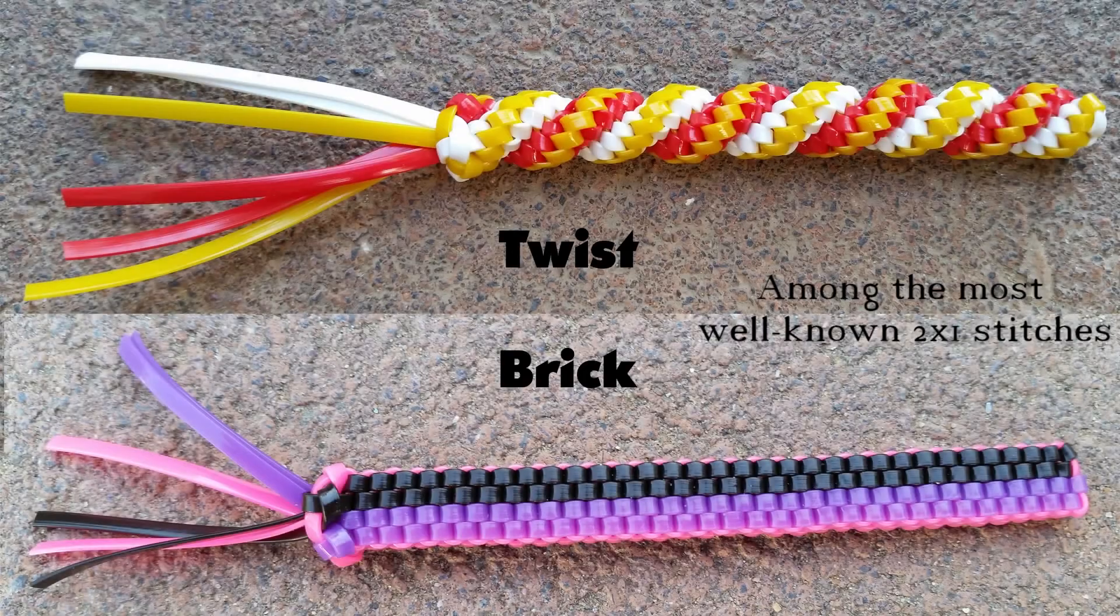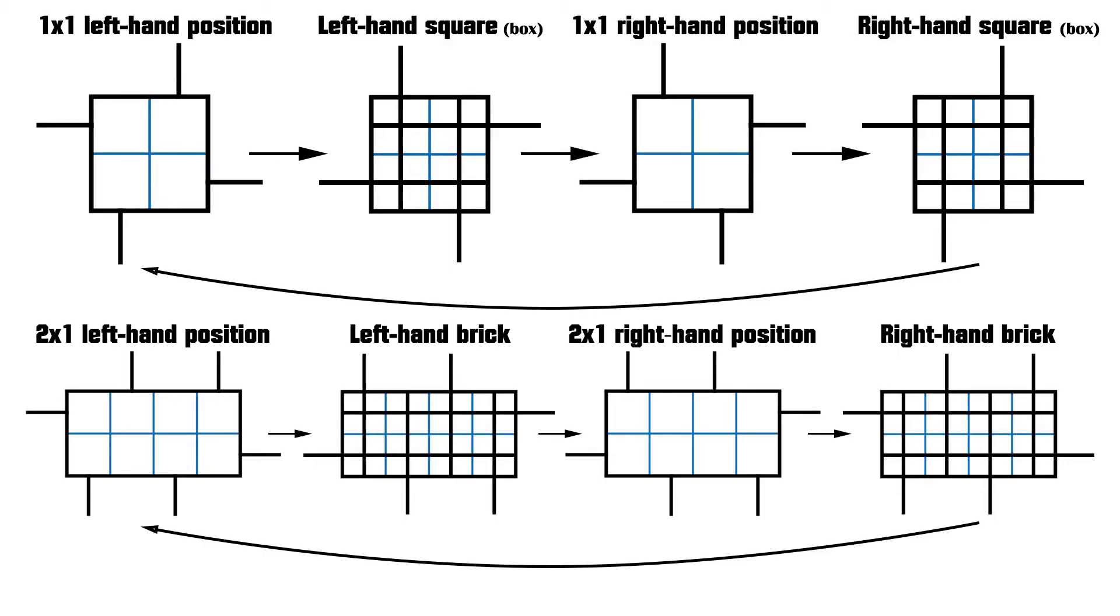Among the most well known 2x1 stitches are the brick and the twist. A brick stitch is very similar to a square because in order to complete a whole turn you need to make what I call two-handed bricks, the right hand and the left hand, which are mirror images of one another.